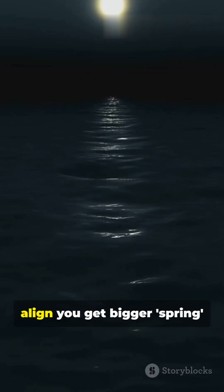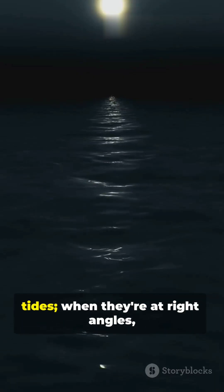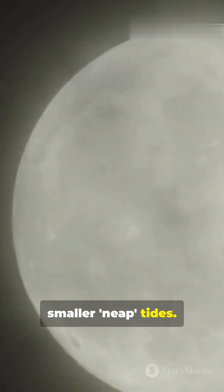When the sun, the moon, and the Earth align, you get bigger spring tides. When they're at right angles, smaller neap tides.